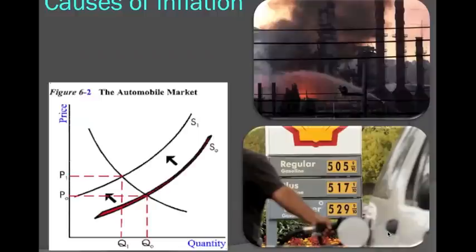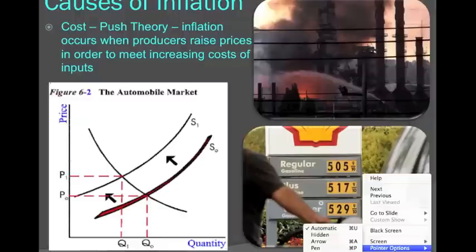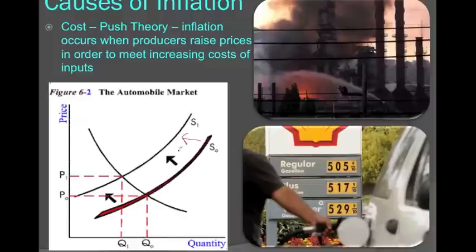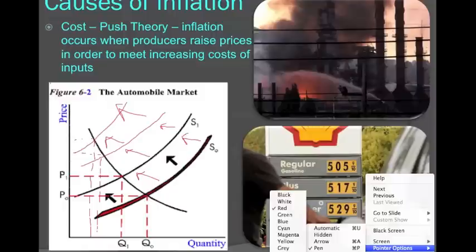The final theory for why prices go up is called the cost push theory. With cost push, we're also looking at supply and demand — when the cost of running a business increases, supply will decrease. Anything that becomes more expensive for a business shifts the supply curve to the left, effectively pushing product prices up. So with the cost push theory, supply shifts left for some product, causing an increase in price levels across the economy. Whether it is the quantity theory, demand pull, or cost push, there are three basic theories to why prices go up. We'll talk more about this in class, and you can proceed to the quiz.